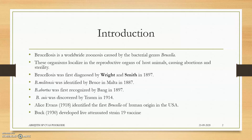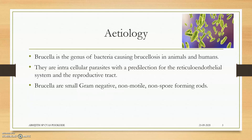Brucella is a bacteria that localizes in the reproductive organs of host animals, causing abortions and sterility. It is mainly a reproductive disease. It belongs to a gram-negative phylum — non-motile, non-spore-forming rods, non-capsulated. They are intracellular parasites, found in the reticuloendothelial system, which produces blood cells, and in the reproductive tract.